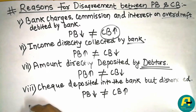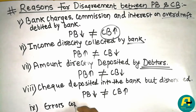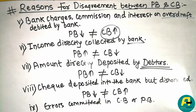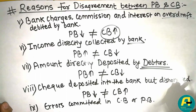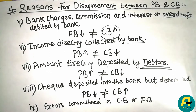The last reason for BRS is errors committed in the cash book or pass book. If there is an error committed in the cash book or pass book, then the balance will differ. That is why there is a need for the Bank Reconciliation Statement — to reconcile and to equalize the balance of the cash book and pass book.